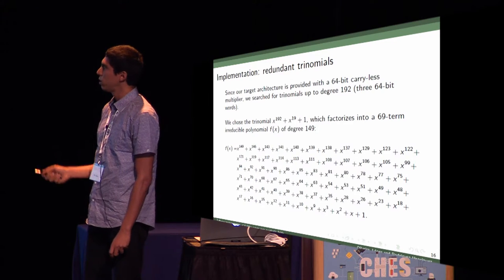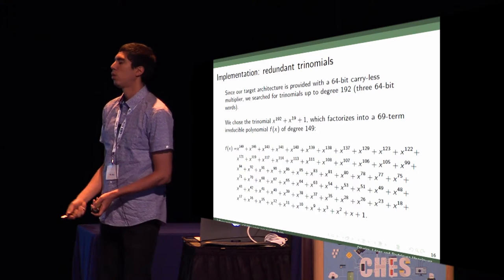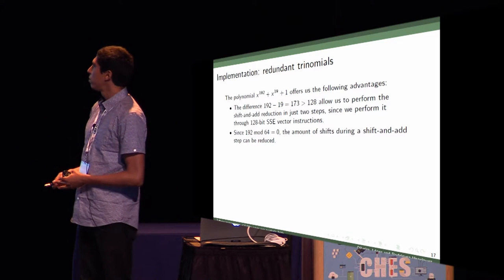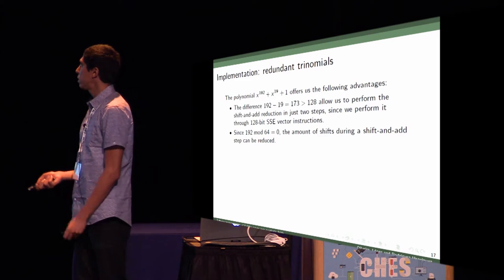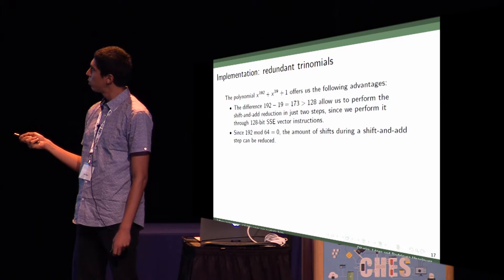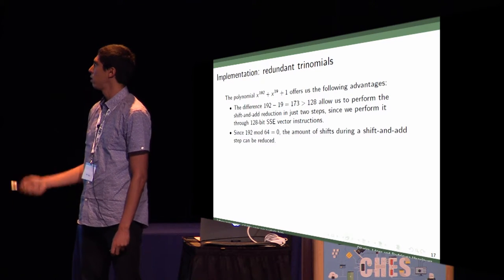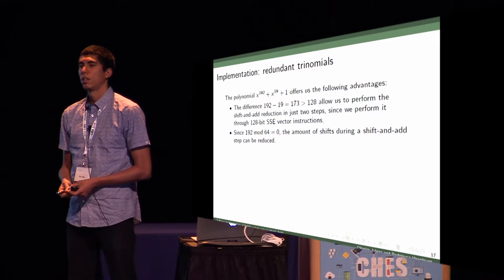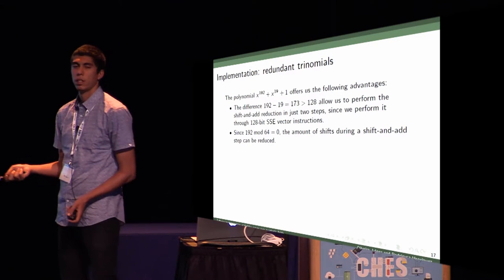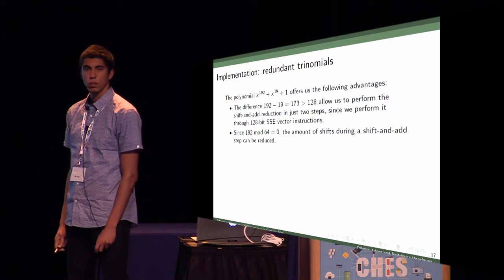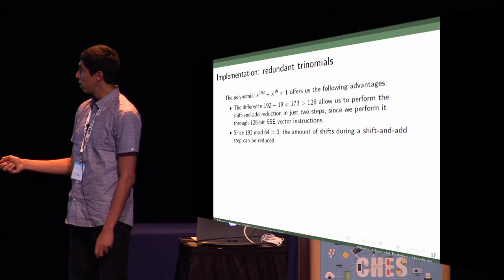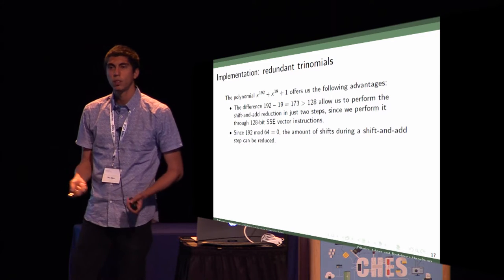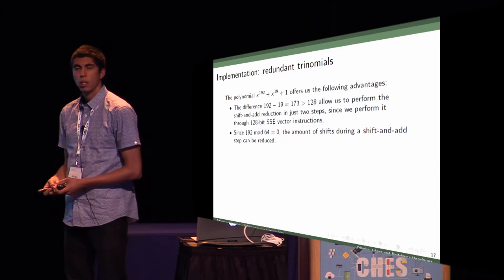But we want to use this trinomial to reduce throughout our algorithm, because this polynomial has two great advantages. The difference between 192 and 19 is more than 128, which is the size of our registers, because we are using 128-bit vector instructions. Also, because 192 mod 64 equals zero, we can reduce the amount of shifts during our shift and add steps.